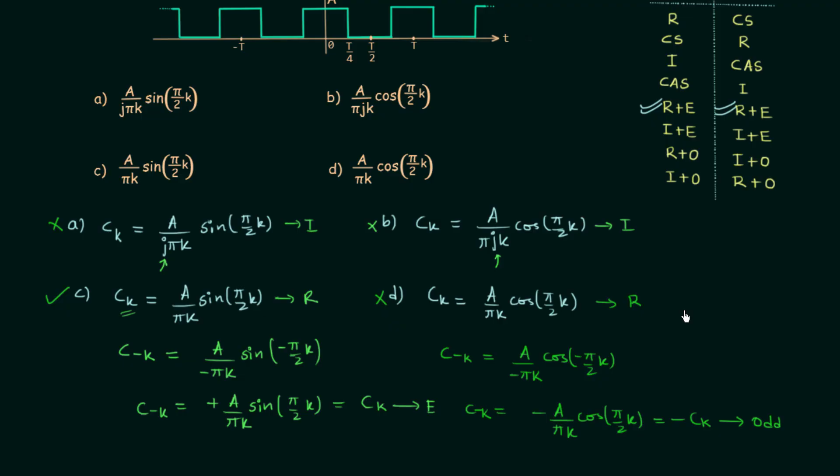So this is how you have to use XTCN pairs. This is one shortcut method to solve the objective questions related to complex exponential Fourier series. If you have any doubt you may ask in the comment section. I will end this lecture here. See you in the next one.